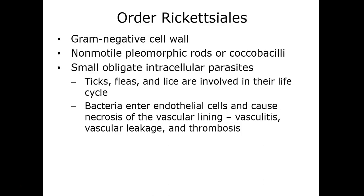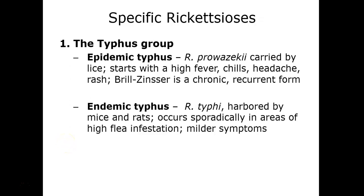Rickettsias are gram-negative with a thin peptidoglycan layer. They are pleomorphic — they can vary their shapes between rods or shortened rods known as coccobacilli. These intracellular parasites are acquired through vectors such as ticks, fleas, or lice. The bacteria enter endothelial cells and damage the vascular lining, causing vasculitis, leakage, and thrombosis. They are broken down into the typhus group, which includes epidemic typhus and endemic typhus.